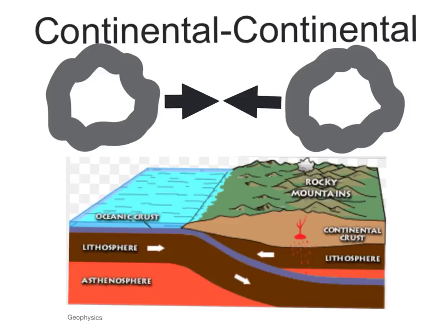Continental-Continental Collision. Two continental plates that collide together. When they collide, they create mountain formations. They also cause earthquakes. An example of a mountain range is the Himalaya Mountains.